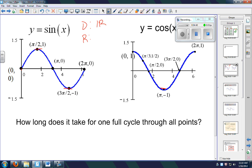Think about the unit circle. Okay, unit circle's got a radius of 1. You're never getting outside that radius of 1. Okay, so there's our domain and range. Question at the bottom: how long does it take for one full cycle to go through all the points here?